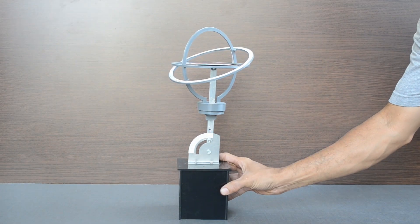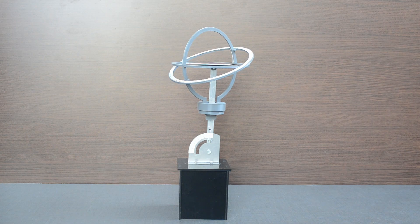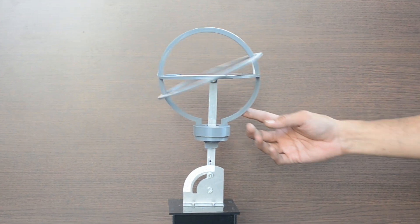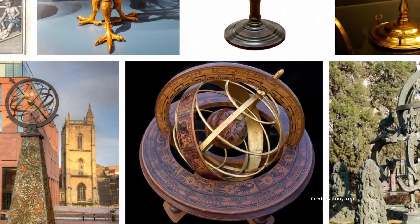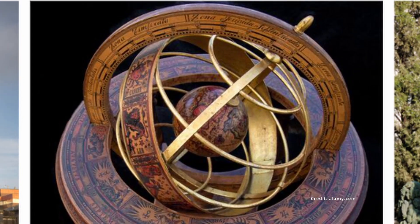This is a simplified version of an armillary sphere. It is an early astronomical device used to represent various celestial objects and related terms.